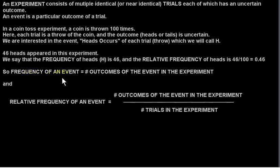So in general, the frequency of an event is the number of outcomes of the event in the experiment. And the relative frequency of an event is the number of outcomes of the event in the experiment divided by the number of trials in the experiment. So we're comparing the frequency to the total number of trials.